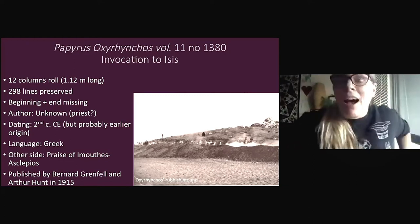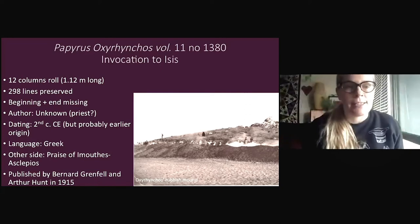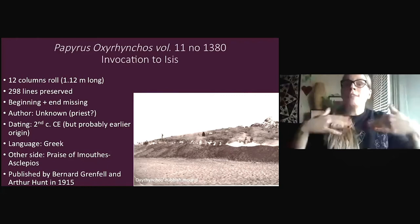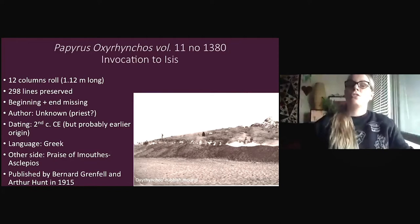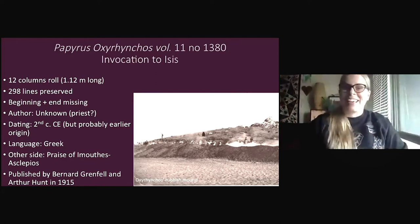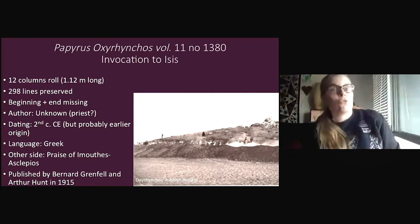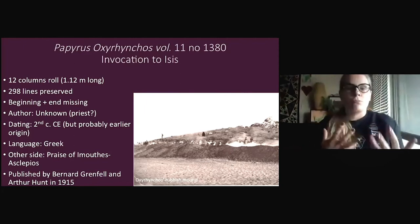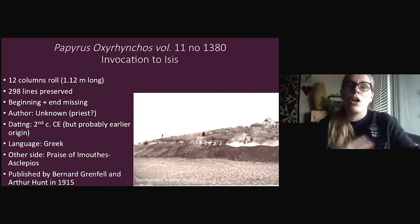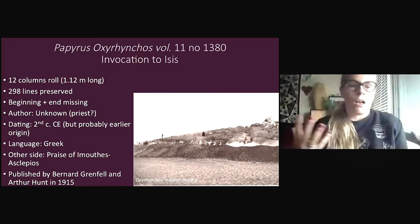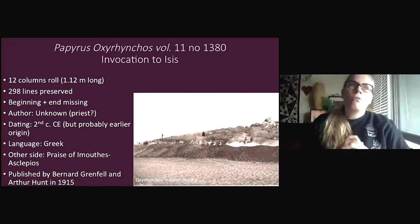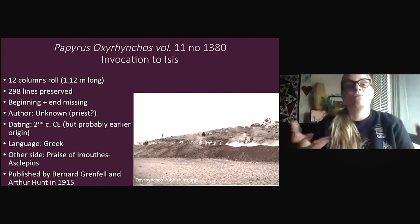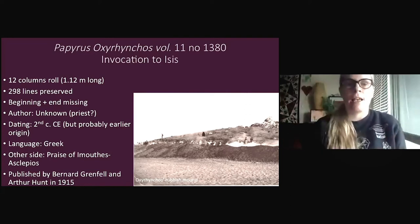The beginning and the end of the invocation are lost, so we have a middle section. On the other side of the papyrus, we have another text — people in antiquity were also recycling their papyrus or maximizing its use. This other text is also written in Greek. It is another religious text, a praise of Imhotep-Asclepius, who is a god linked to medicine and healing, and also a later form of the god Imhotep, known as the man who invented the pyramids. Although we don't know who wrote or composed this text, it seems quite likely that it was used in some religious context.